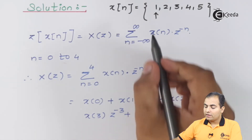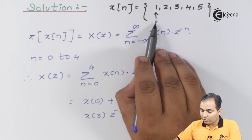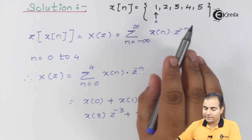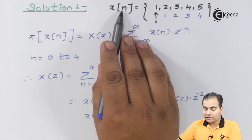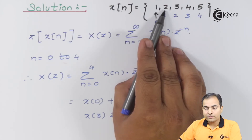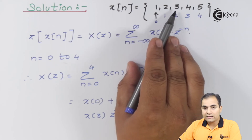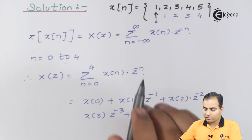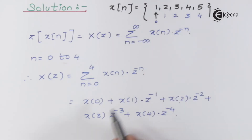The origin is at the leftmost position, so all instances to the right are positive. At n=1, the amplitude x[1] = 2; at n=2, x[2] = 3; at n=3, x[3] = 4; and at n=4, x[4] = 5. So x[0]=1, x[1]=2, x[2]=3, x[3]=4, x[4]=5. Substituting all these values into the formula gives us the Z-transform.